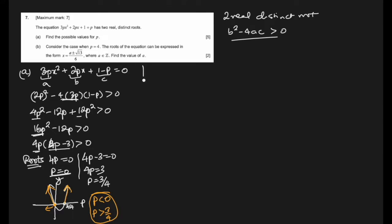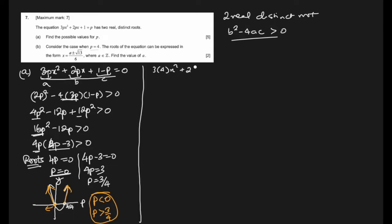For the next part, consider the case when p = 4, which lies to the right of 3/4. Substituting p = 4 into the original equation: 3(4)x² + 2(4)x + 1 - 4 = 0, which gives 12x² + 8x - 3 = 0. The roots of this equation can be expressed in the given form where a is an integer.